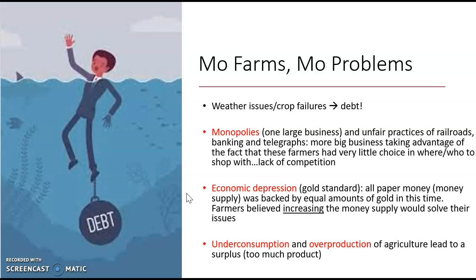Another problem: underconsumption — consumers don't exist for a lot of their products. There are going to be waves of panics and boom-and-bust cycles, so there won't always be people to consume their products. In many cases, overproduction: farmers grow too many crops or raise too much livestock, and the demand isn't there. Both of these economic conditions lead to a surplus — they have too much product. All of these things happen over and over again from the 1860s, and ultimately they culminate in a presidential election in 1896 where these farmers get a candidate they actually back.